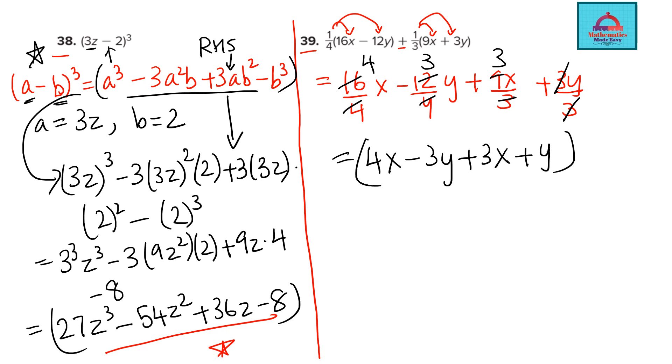So that's your final answer. Now, just think about, is there anything more you can do? Do you have like terms? So these two terms have the same variable x. They can be combined. They can be added. So 4 plus 3 is 7x minus 3y plus y. So that completes your solution.